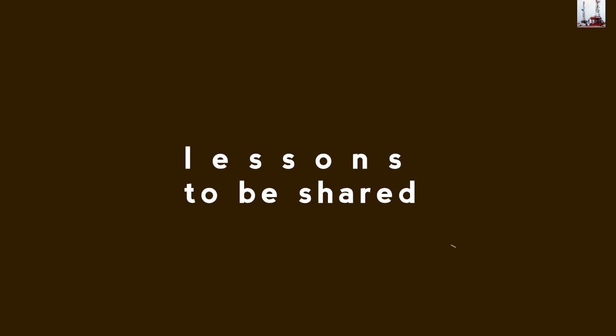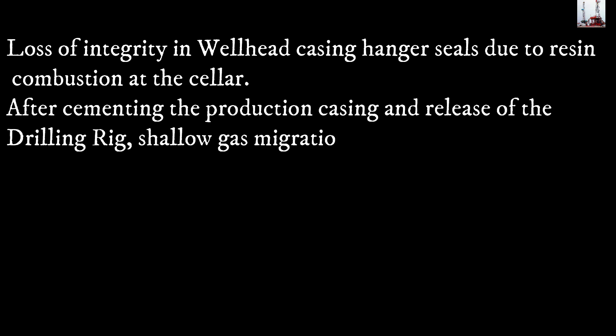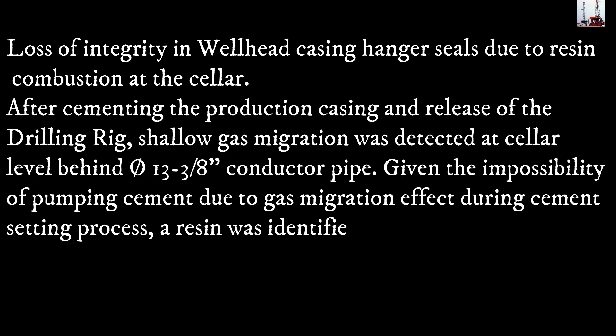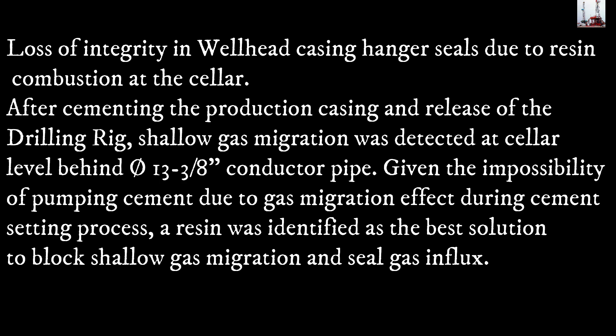Lessons to be shared. Loss of integrity in wellhead casing hanger seals due to resin combustion at the cellar. After cementing the production casing and release of the drilling rig, shallow gas migration was detected at cellar level behind the O13-3/8ths conductor pipe. Given the impossibility of pumping cement due to gas migration effect during cement setting process, a resin was identified as the best solution to block shallow gas migration and seal gas influx.